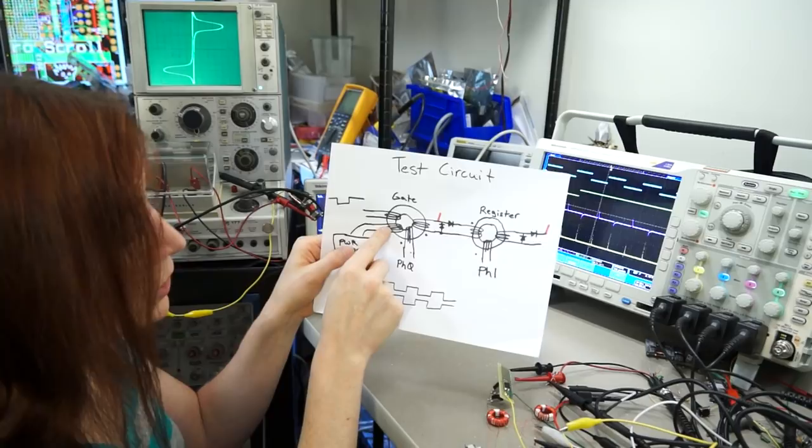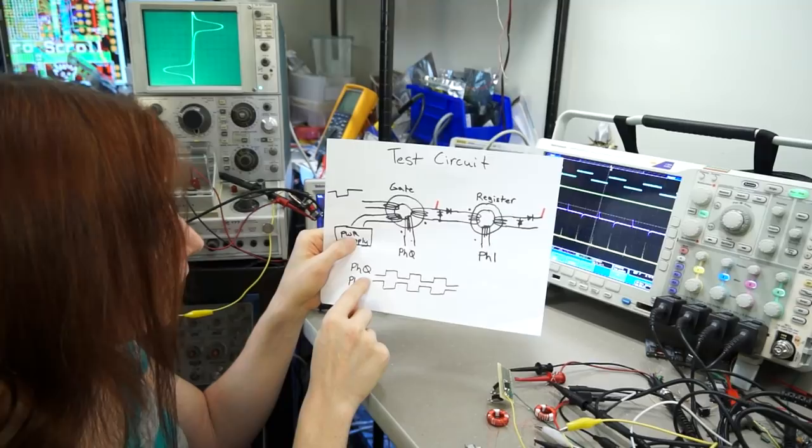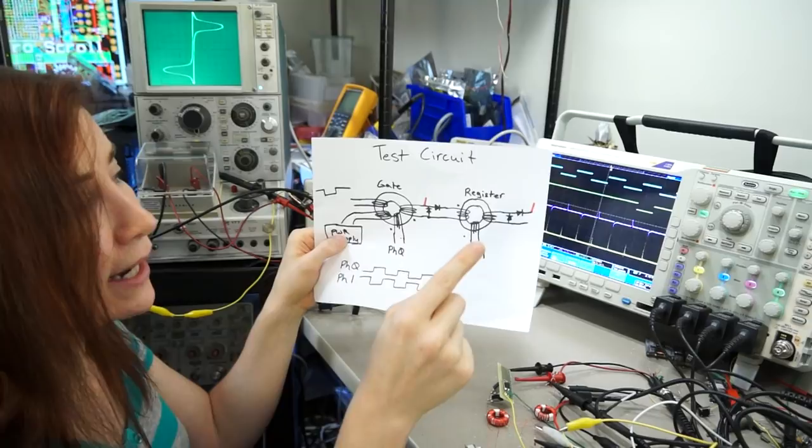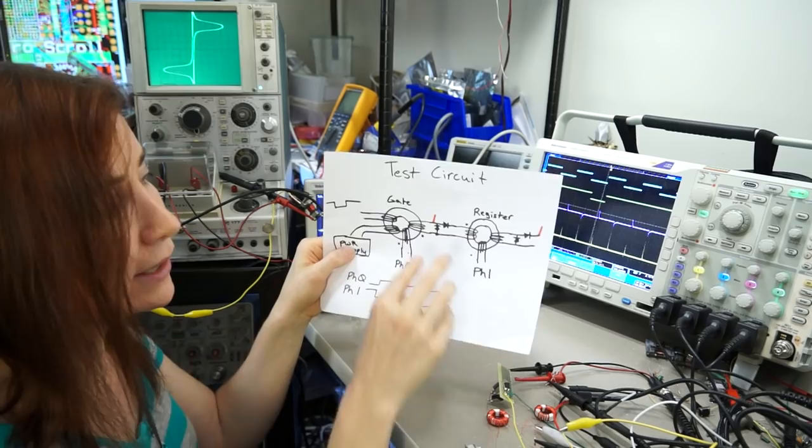Alright, so I've got a two input gate, and then I just have a register storage element. I have a clock that's split into two phases. So, first the gate will be evaluated, and then second the register will be evaluated. So, first something will happen here, and then it gets shifted into the register. Alright, so this is a pipeline, just a very small pipeline.